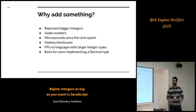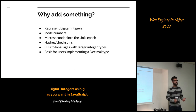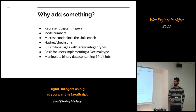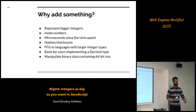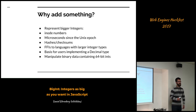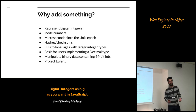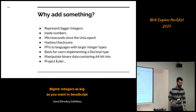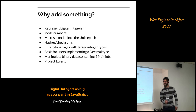BigInt could be used as a basis for implementing a decimal data type, for example to store money values. There are also lots of binary data formats that come up with 64-bit integers in them — this comes up in new network protocols or file system formats. And if you're solving a project or other problem, it's much easier if you have BigInt as a basic data type.